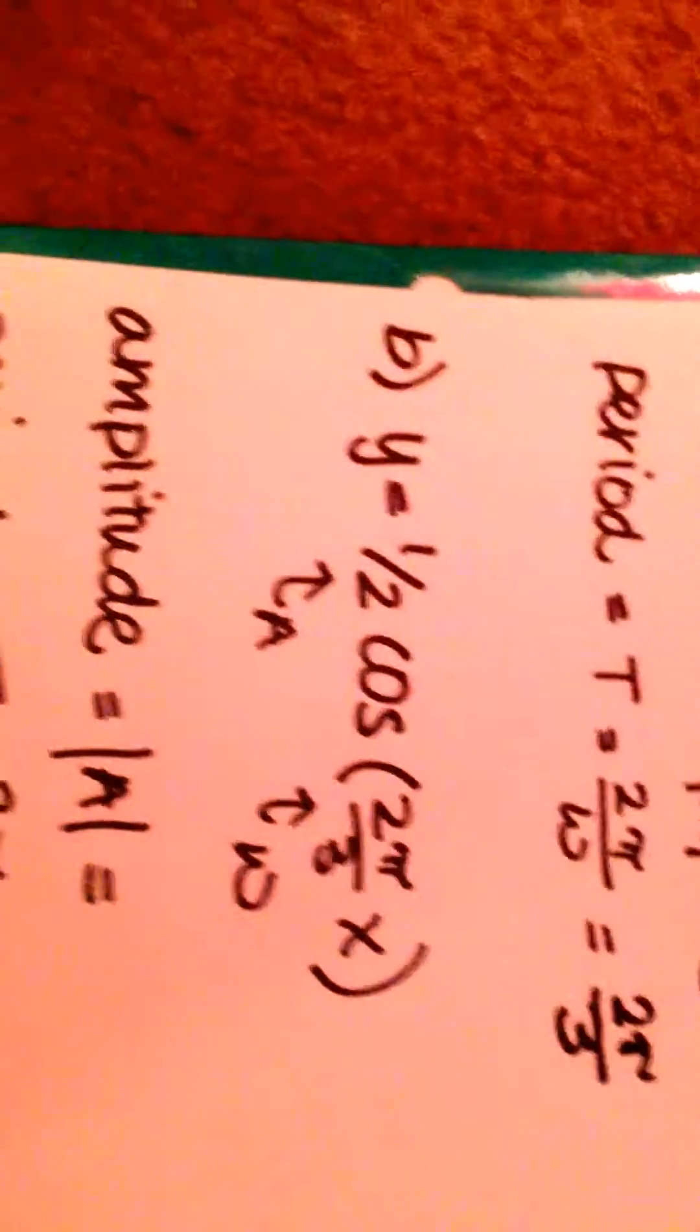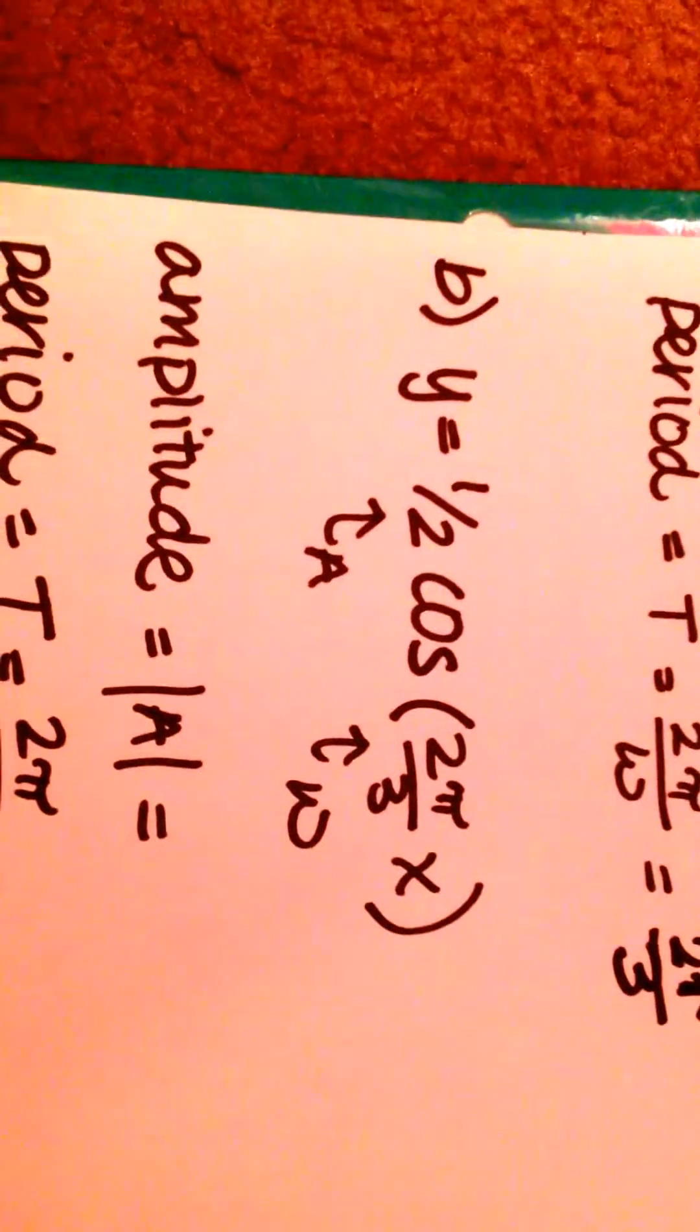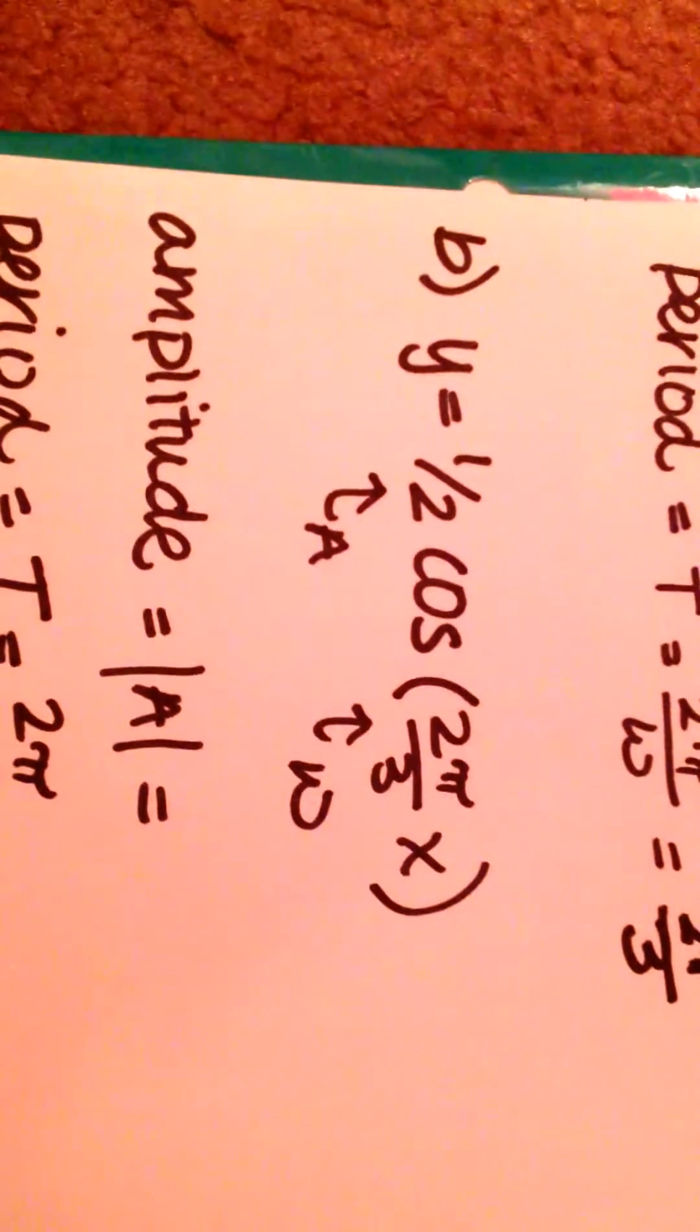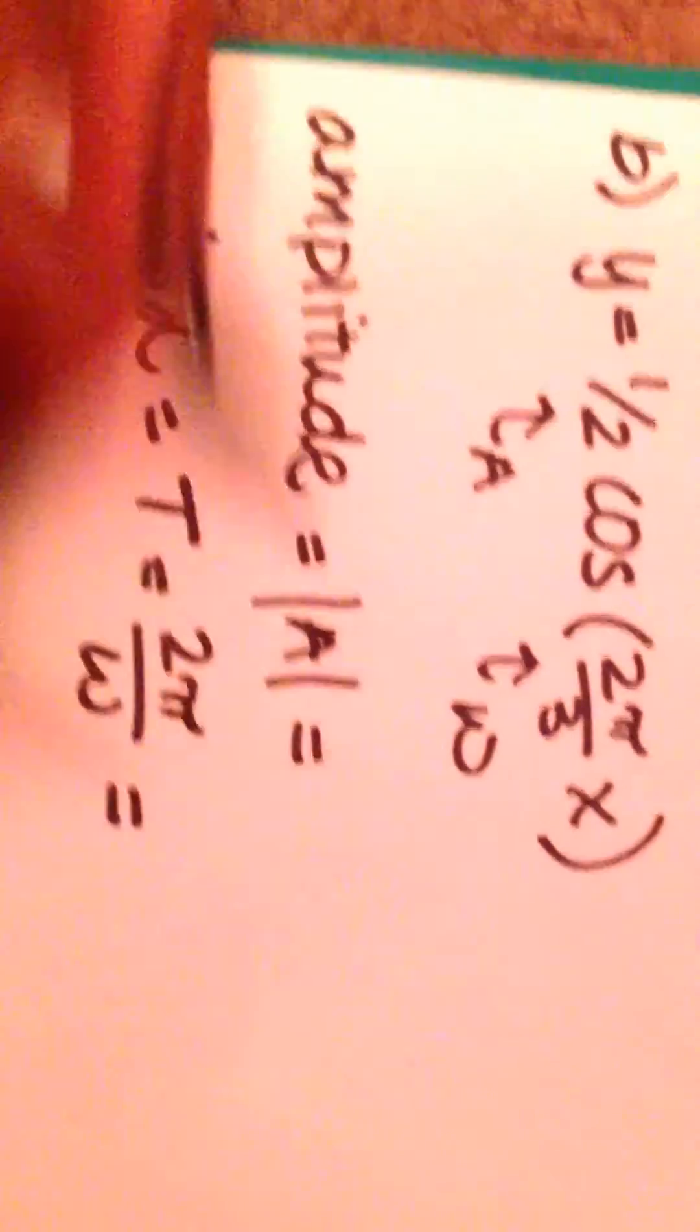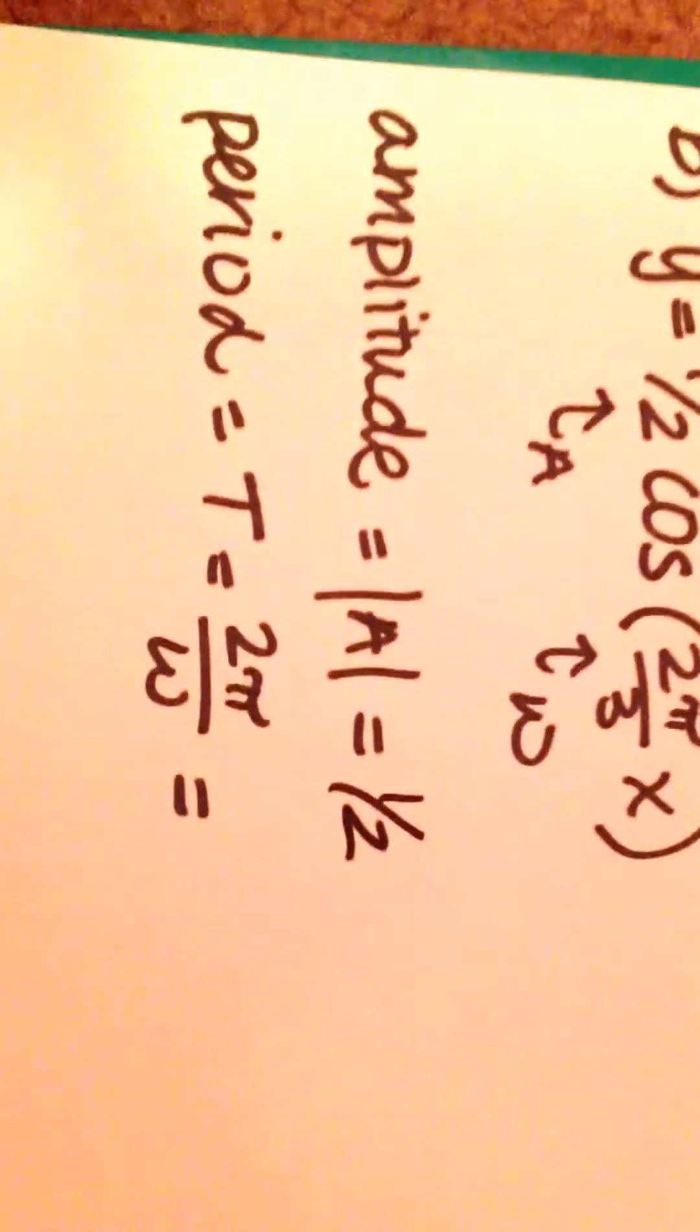Our next one is Y equals 1 half cosine of 2 pi over 3X. Well, our amplitude is absolute value of A, which is 1 half. So our amplitude is 1 half.